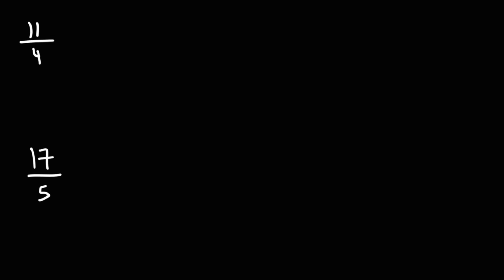Let's talk about how to convert an improper fraction to a mixed number without using long division. 11 over 4, we can write that as 8 over 4 plus 3 over 4. 8 plus 3 is 11, and 8 is the highest multiple of 4, just under 11.